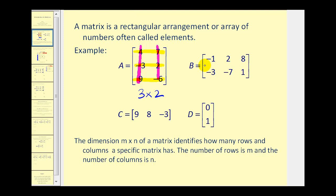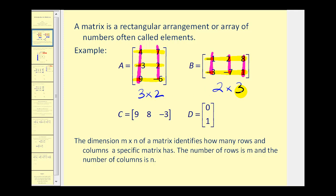If we take a look at matrix B, this has one, two rows and one, two, three columns. Therefore, this is a two by three matrix. You can see why it's so important that the rows come first and the columns are second, because a three by two is quite different than a two by three matrix.